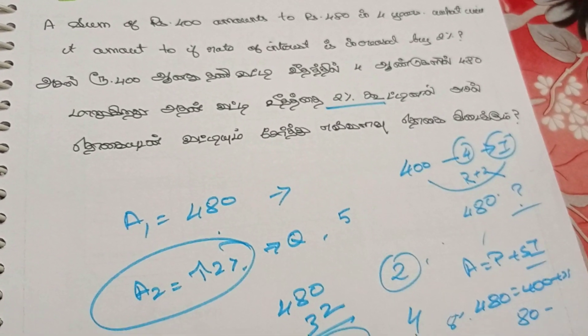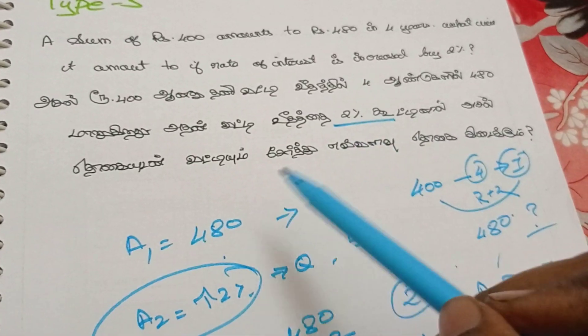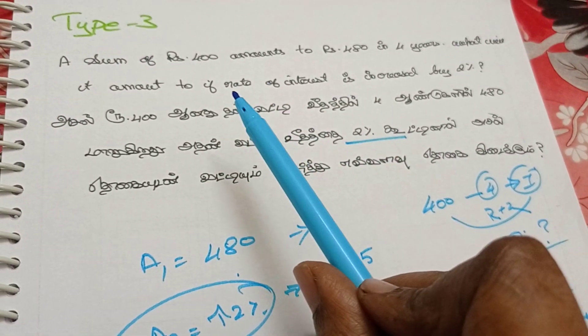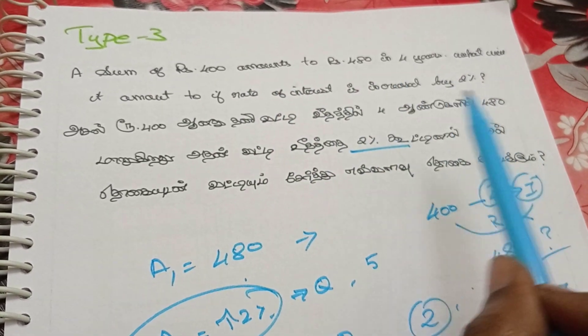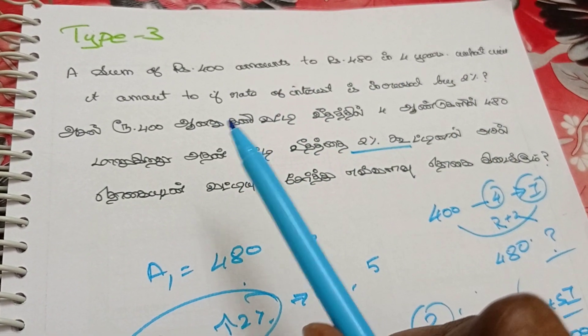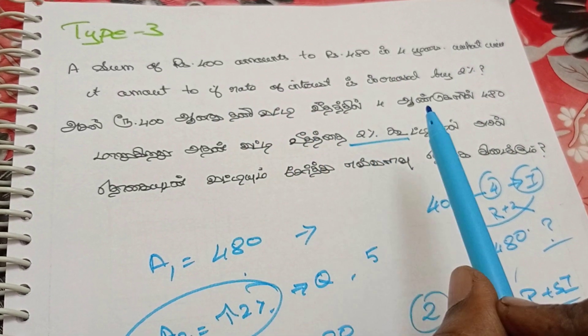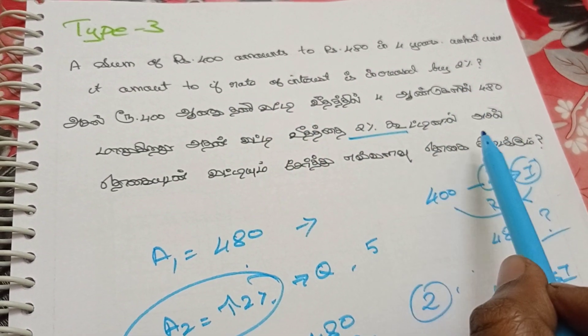Rs.400 amounts to Rs.480 in 4 years. What amount results if the rate of interest is increased by 2%?